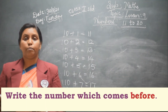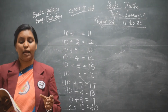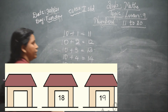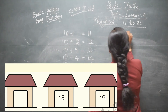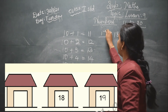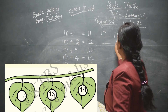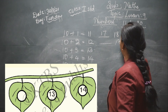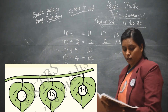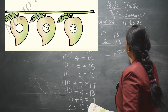Similarly, on the next page, write the number which comes before. The first number is blank; the second and third numbers are 18 and 19, so what number comes before 18? It is 17. In the second row it is 13 and 14, so what number comes before 13? It is 12.